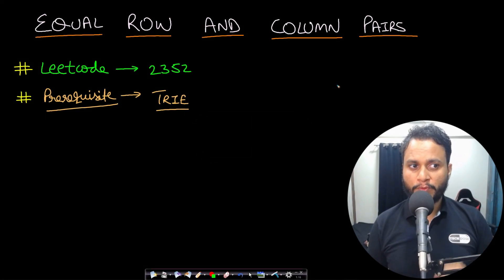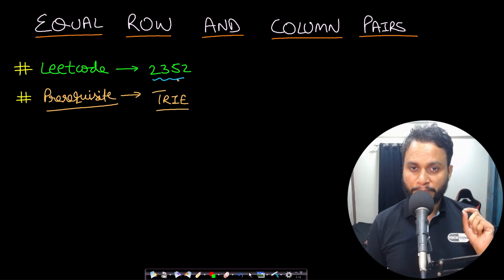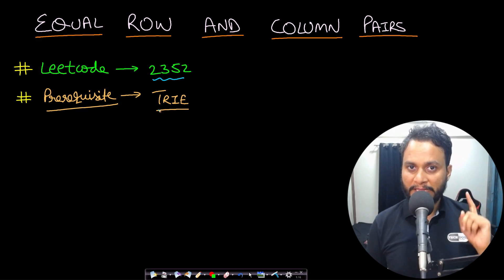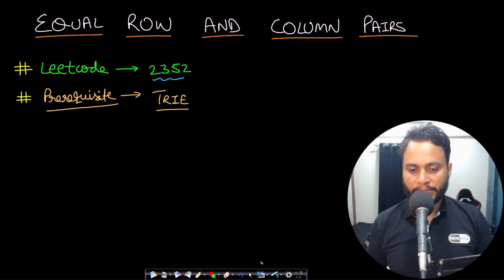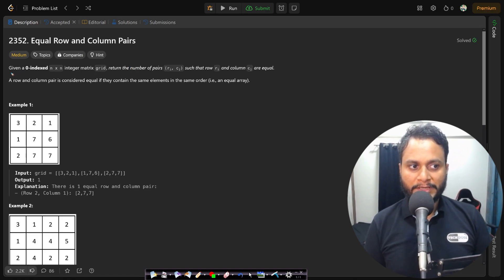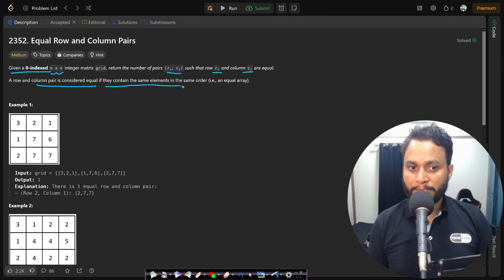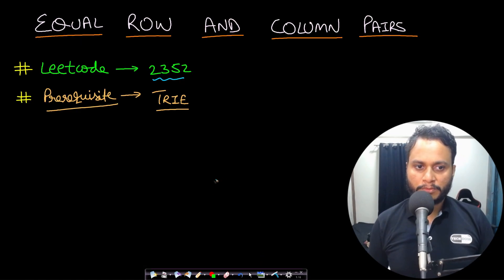Hello guys, welcome back to TechDose. In this video we will see the Equal Row and Column Pairs problem, which is LeetCode number 2352. The prerequisite before solving this is to watch my video on Trie — the link will be in the info button and also in the description below. You should watch and learn Trie, then come back to this problem. A row and column pair is considered equal if they contain the same elements in the exact same order.